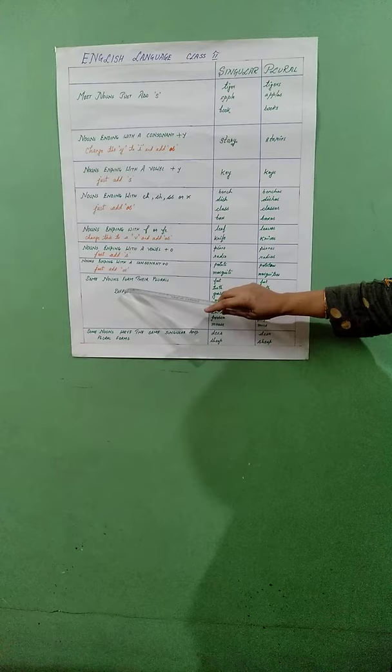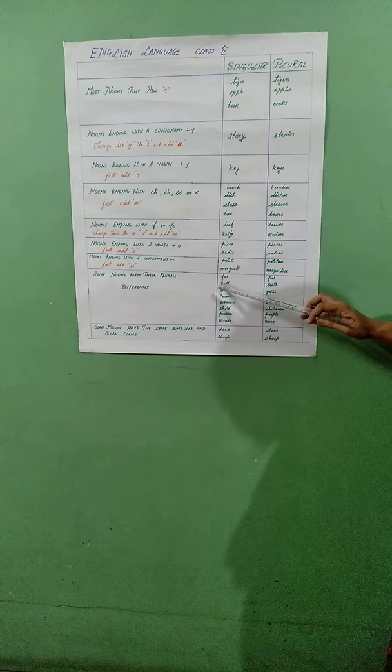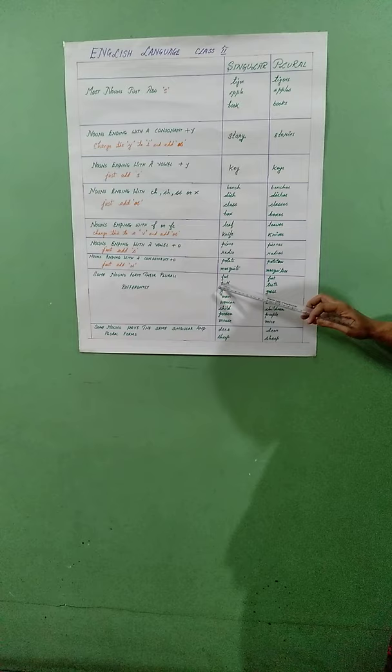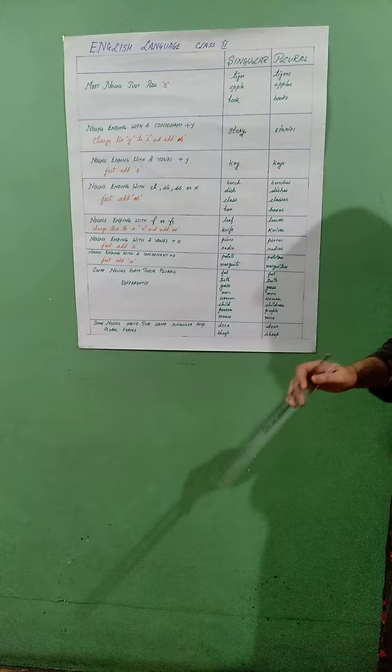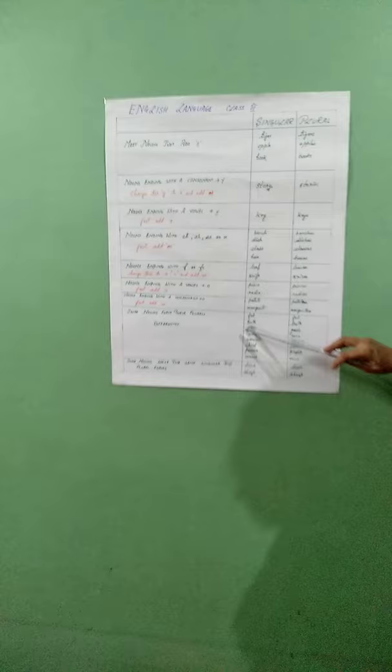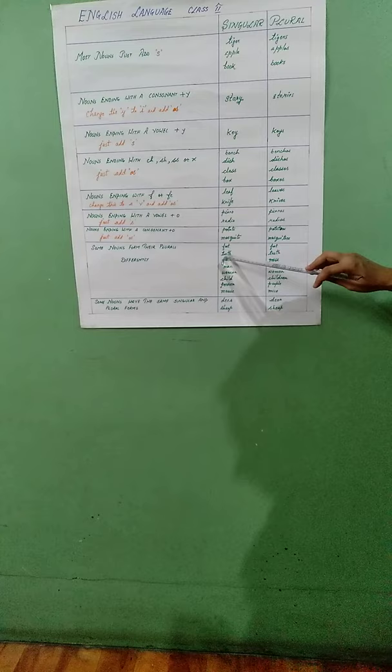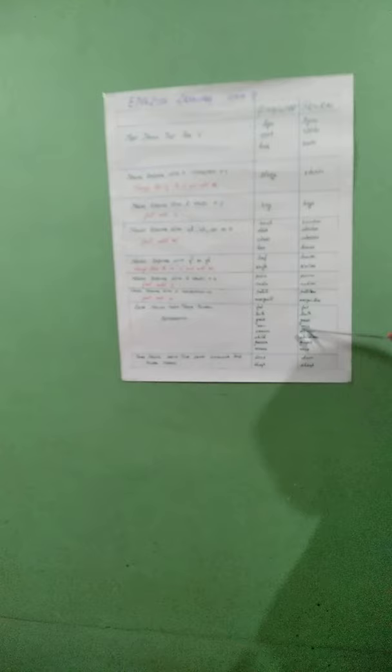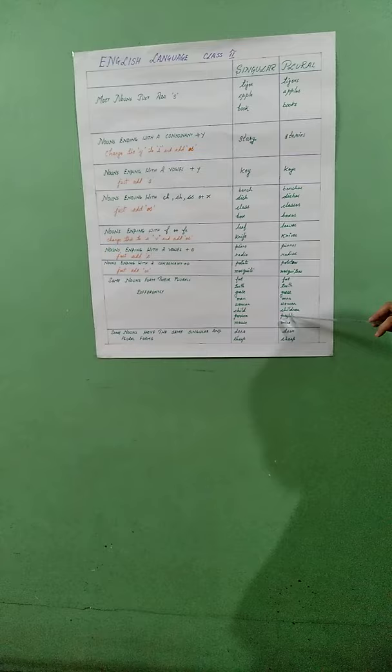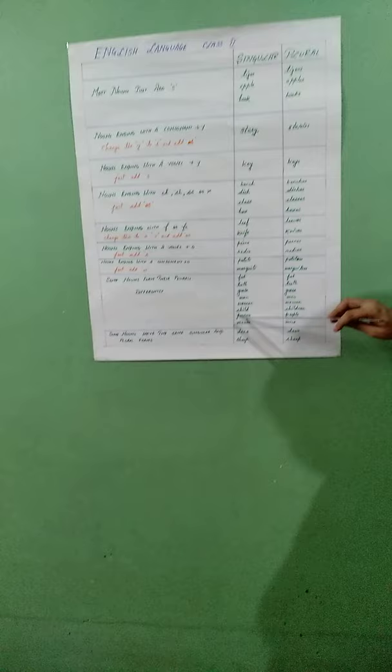There are some nouns which are used in a totally different way. For example, foot — we don't say foots or footes; it becomes feet. Tooth is used for a single tooth and its plural is teeth. Goose becomes geese. Man changes into men. Woman into women. Child to children. Person to people — when we address a group of people. Mouse becomes mice.